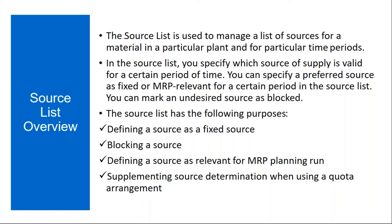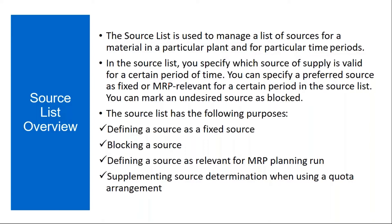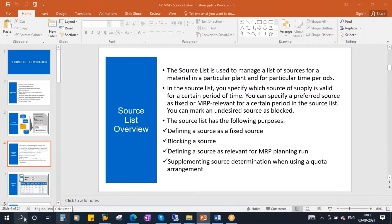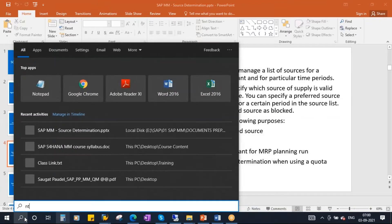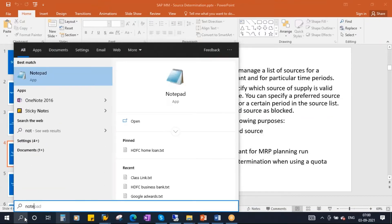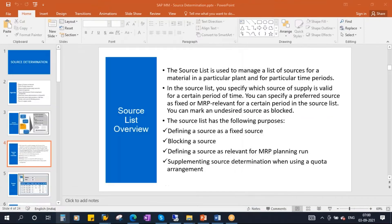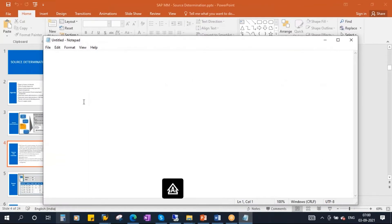What is a source list? The source list is used to manage a list of sources for a material in a particular plant and for particular time periods. Basically, in the source list, you maintain the possible sources of that particular material. Suppose, let me explain in a notepad file.